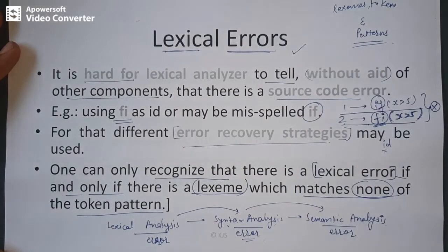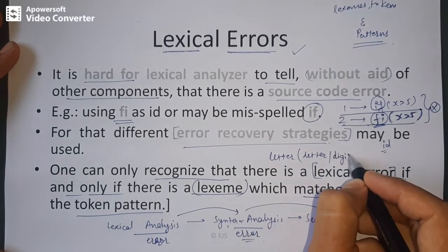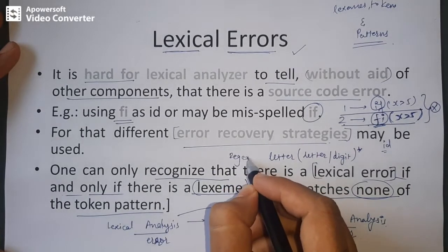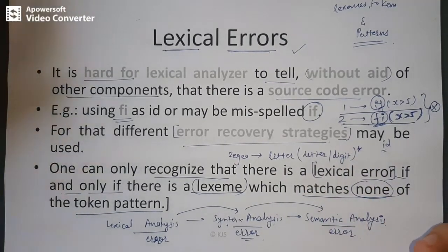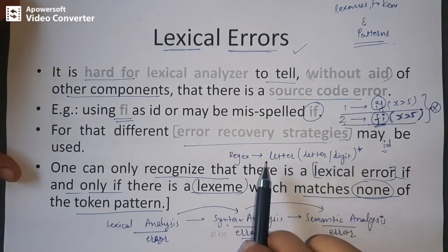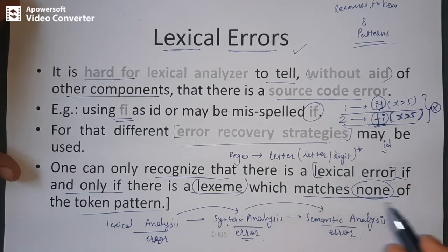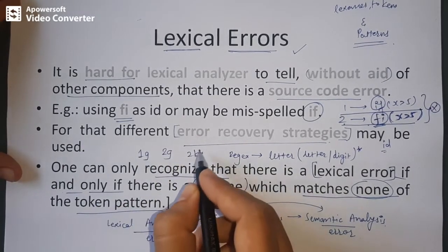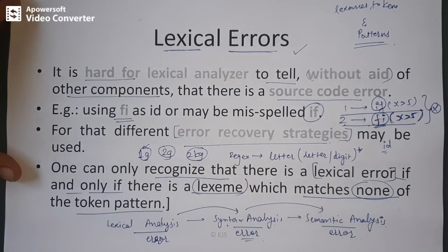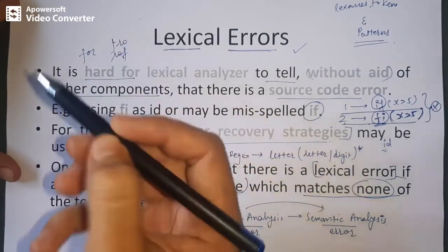For example, an identifier pattern is: it must start with a letter, followed by letters or digits. So if you write '1g' or '2g', these are not valid identifiers because you cannot start with a digit. Starting with a digit is a lexical error. However, 'fi' is recognized as an identifier, so it passes the lexical analyzer.